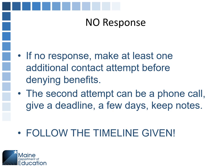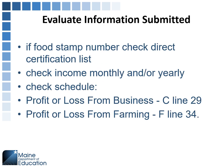If there's no response, you have to make at least one additional attempt — it can be a phone call. Give them a deadline and follow the timeline given. When evaluating the information: if they gave you a food stamp number, check the direct certification list. If they're on it, you're done. Check the income for monthly or yearly, whatever they use. If they're self-employed, they'll need to send Schedule C and you'll use line 29. If it's farming income, they send Schedule F and you use line 34.